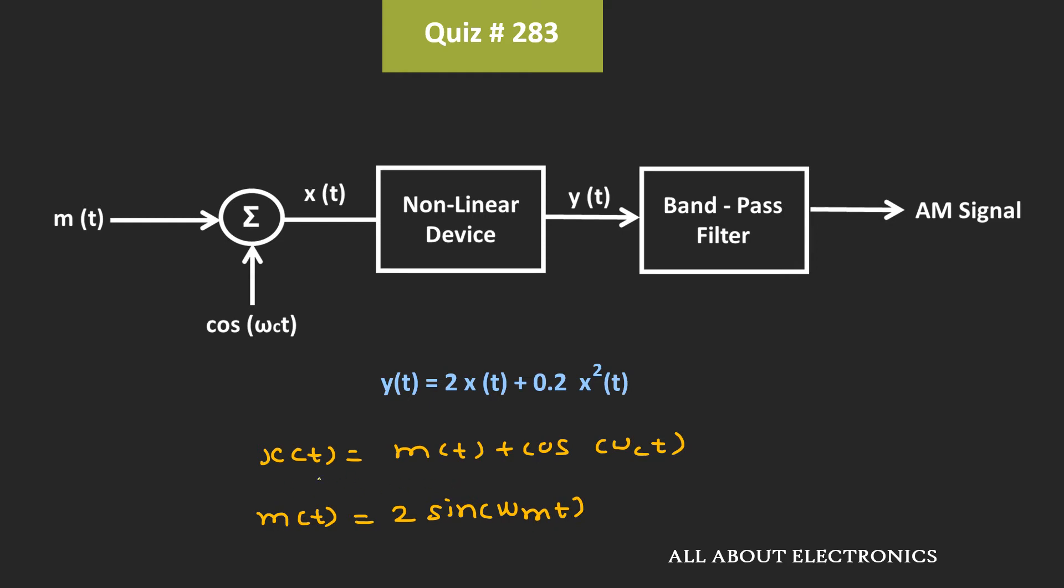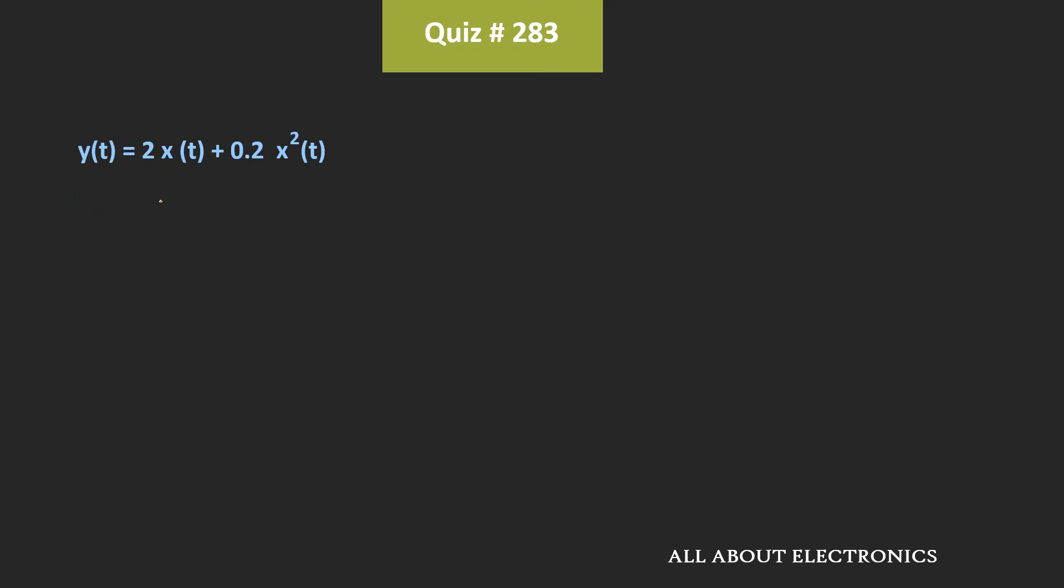So this signal x is given to this square-law device. So, the output of this square-law device, that is y(t) can be given as 2 times x(t) plus 0.2 times x²(t).